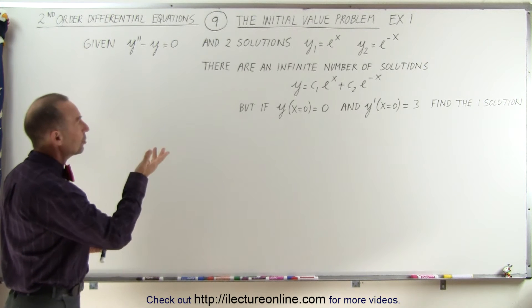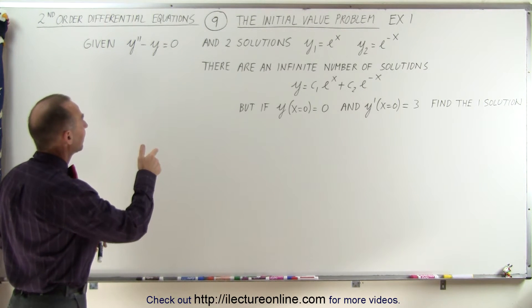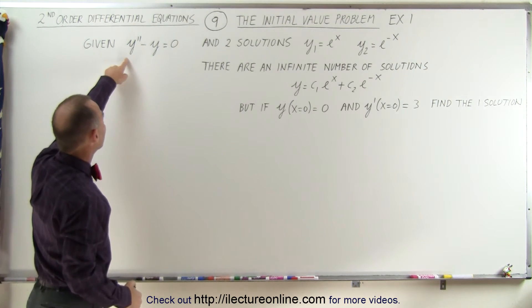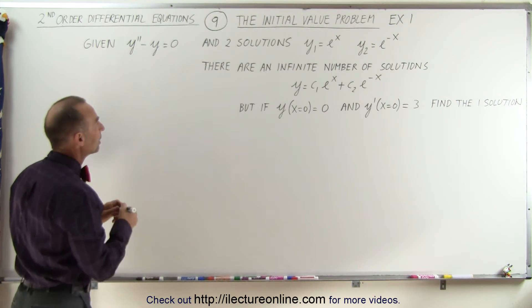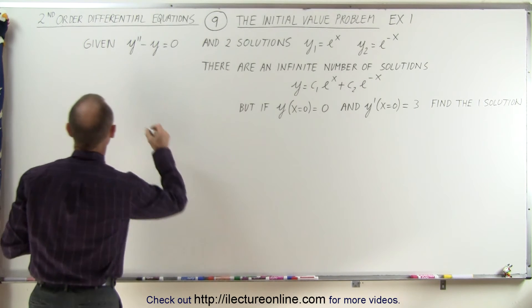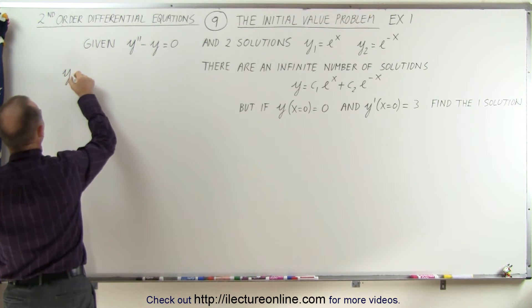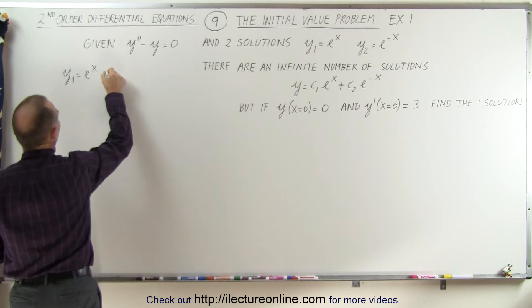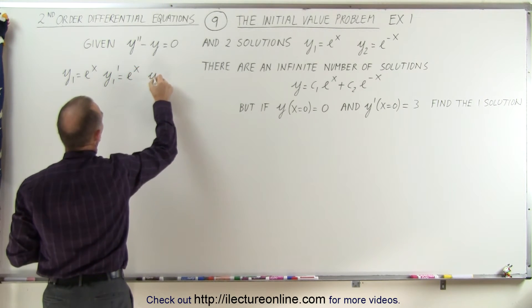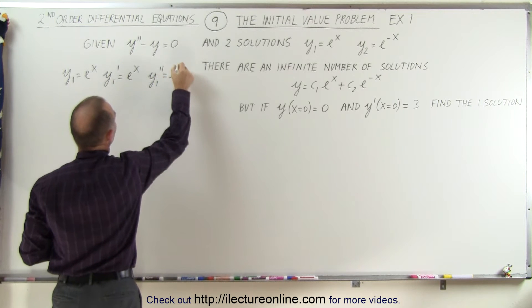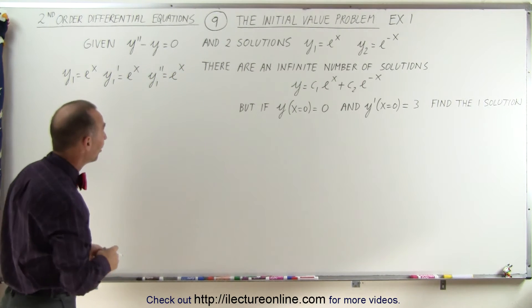To do that, we need to plug in the second derivative and the function into this equation for both possible solutions. So we need to find the first and second derivative. That means if y1 is equal to e to the x, then y1 prime is equal to e to the x, and y1 double prime is also e to the x. Of course, that's the easiest derivative of them all.